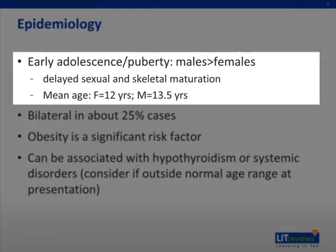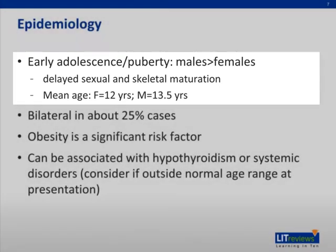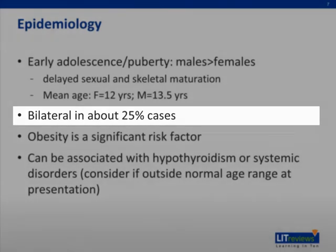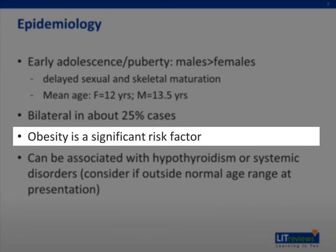SCFE usually occurs in adolescents, in males more so than in females, and especially in children with delayed sexual and skeletal maturation. The mean age of presentation is 12 years in females and 13 and a half years in males. However, this could also occur in younger children depending on risk factors, such as obesity. It is unilateral about 75% of the time, but can be bilateral. Obesity is a significant risk factor.